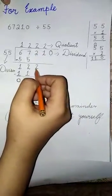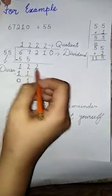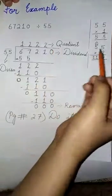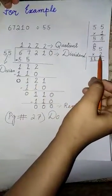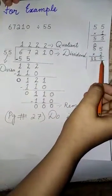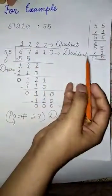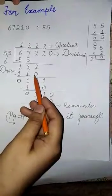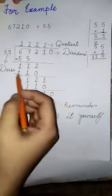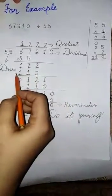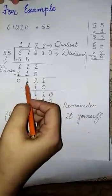We bring down 3 from the hundreds place with the value of 12. We know 55 into 2 we get 110. So we put 2 at quotient place and 110 below 122. Then again we subtract 122 from 110, we get 12.